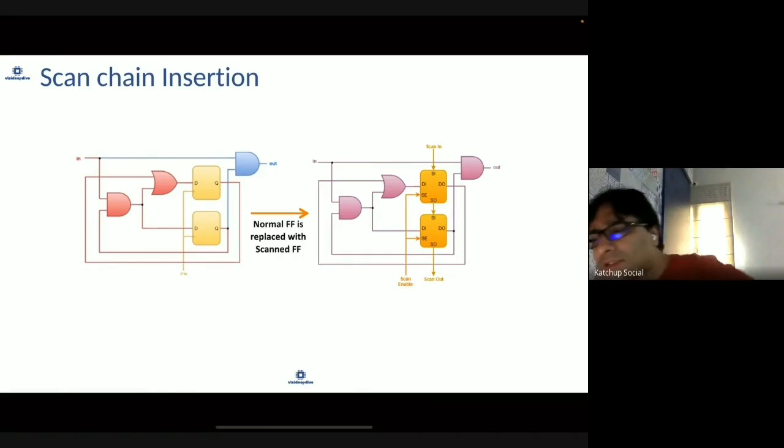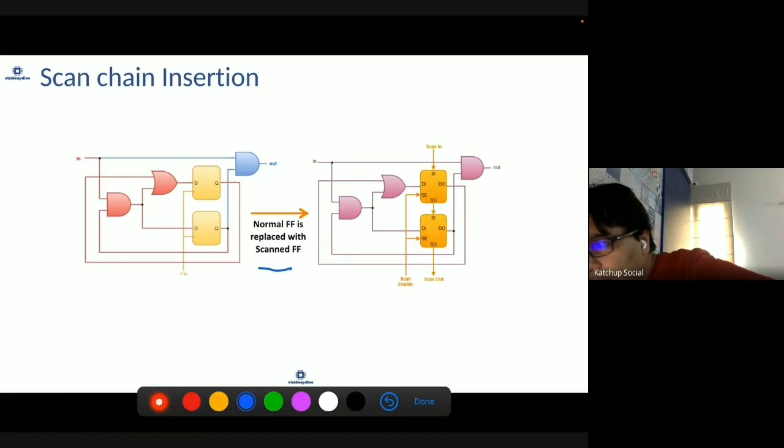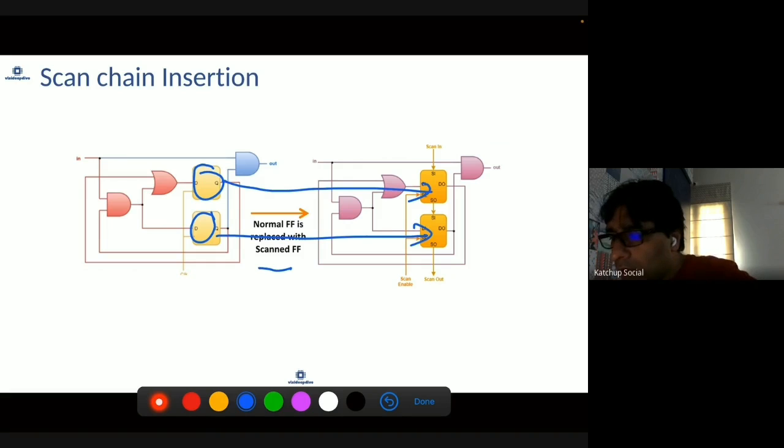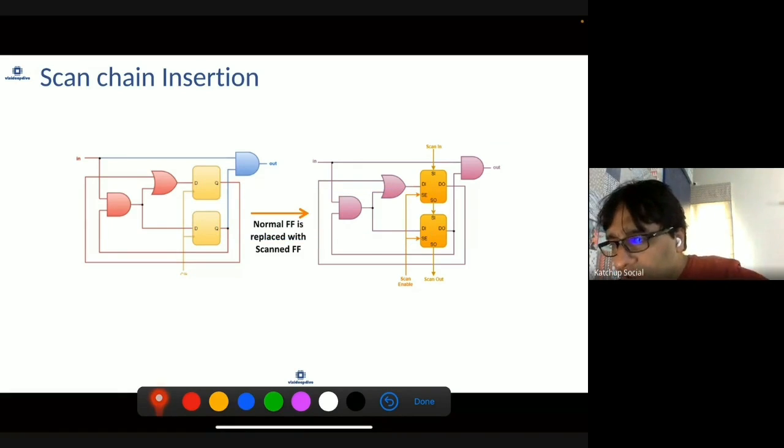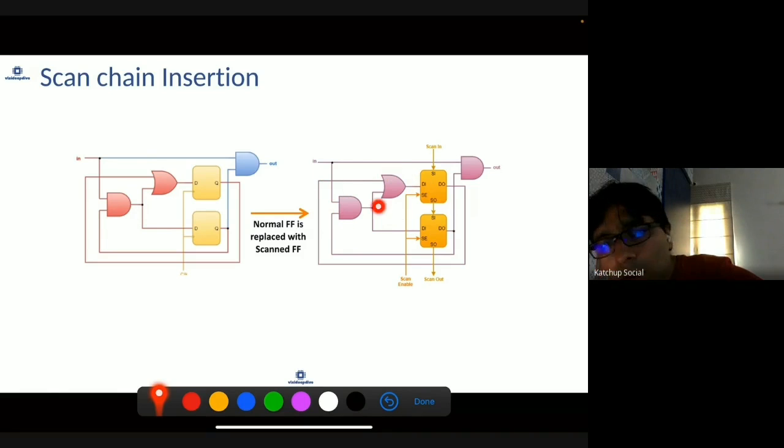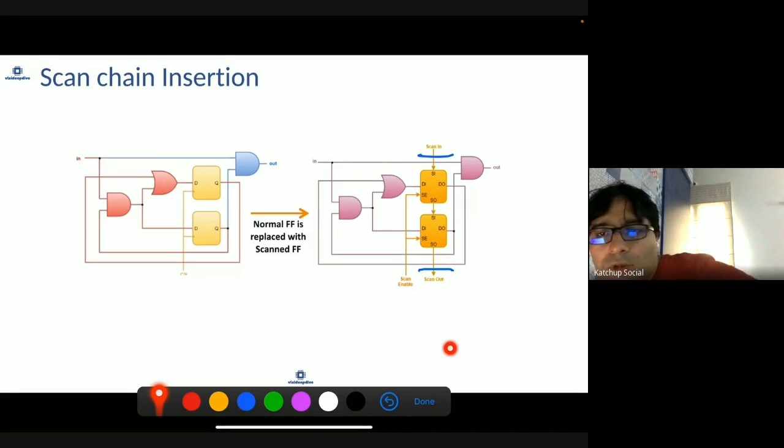What you do is, to create a scan chain, every flop in the design is replaced by a scan flop. This is your normal flop, it is replaced by a scan flop. They are still connected to your normal functionality. This flop was connected to OR gate, AND gate, all this, that normal functionality is still retained. But what happens is, when scan enable is 1, they become part of one big scan chain. This is primary input, this is primary output. When scan enable becomes 1, rather than taking values from the normal logic input, they start taking values from a serial chain which is connected to primary input or output. When scan enable is 0, then normal logic operates.